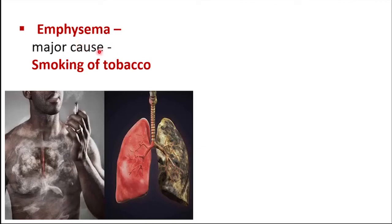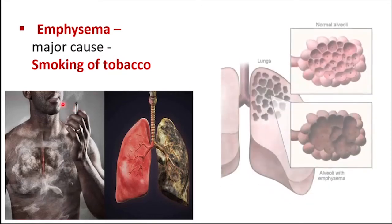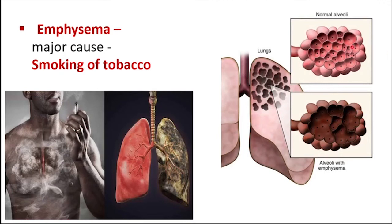The major cause of emphysema is smoking of tobacco. When people smoke, they inhale the smoke, which gets deposited in the inner surface of alveoli. Consequently, the surface area for the exchange of gases is reduced. The alveolar walls are damaged, impairing gaseous exchange. Oxygen from the alveoli cannot reach the blood, and carbon dioxide from the blood won't be eliminated properly.